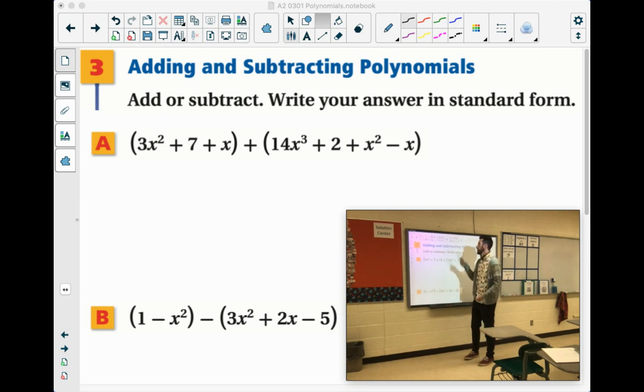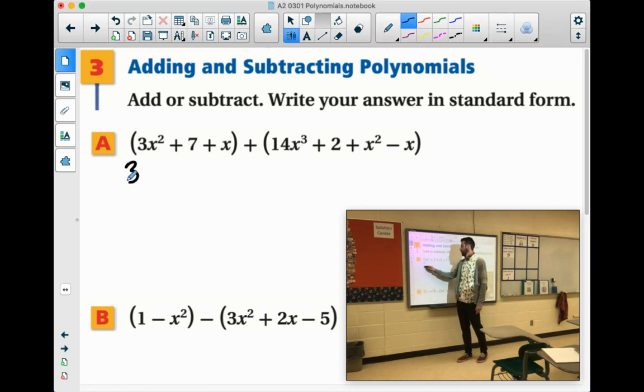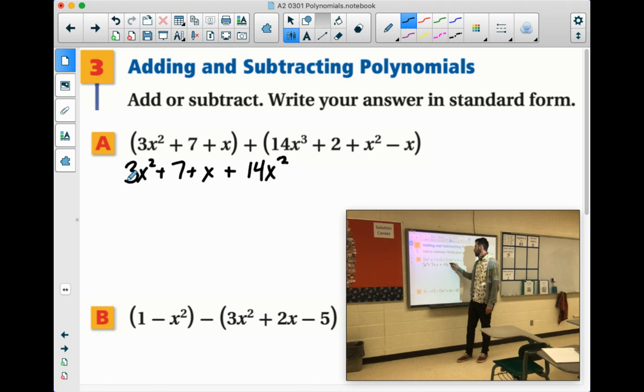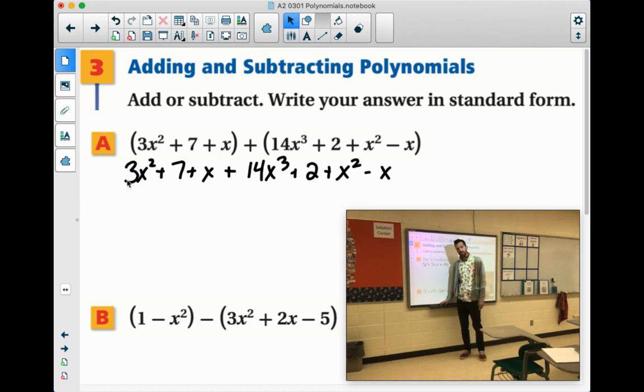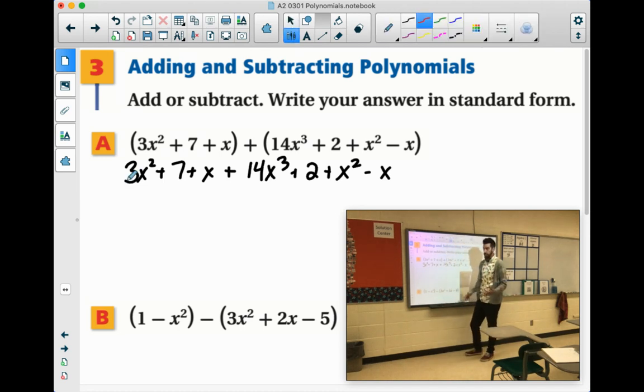So, when you are doing addition, the parentheses don't matter. So I would say just write it without parentheses. So 3x squared plus 7 plus x plus 14x to the third plus 2 plus x squared minus x. Now, when you are adding or subtracting these, you can only add or subtract if they have the exact same ending. They have to have the same variables and the same degrees on those.